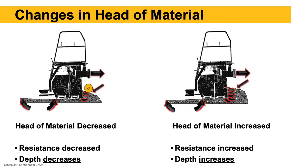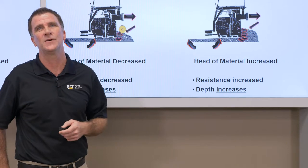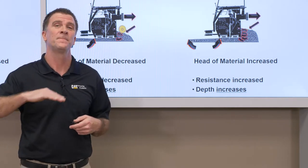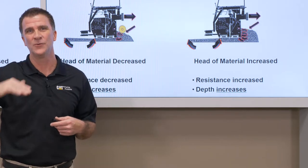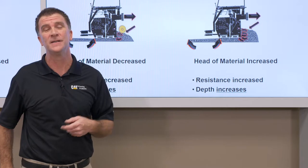Changes in head of material will affect how the screed rides. When head of material drops, the resistance on the screed decreases and mat thickness is going to decrease. If we overload the screed with too much mix — which commonly happens when using manual overrides to jam a lot of mix back all at once — the screed wants to rise up or get thicker. If we don't have constant head of material and good control, our screed will constantly rise and drop as we pave. We may not notice it looking at the mat, but after compaction and running smoothness IRI, those things will show up.